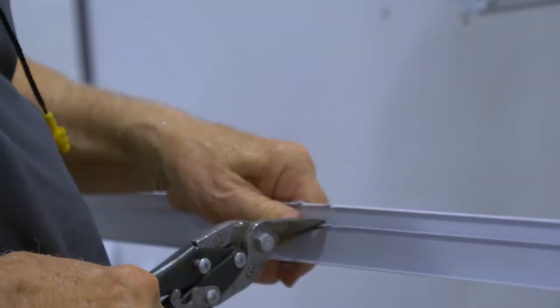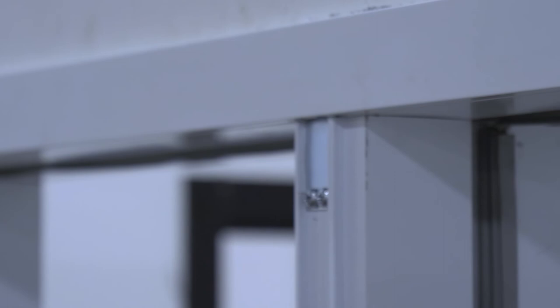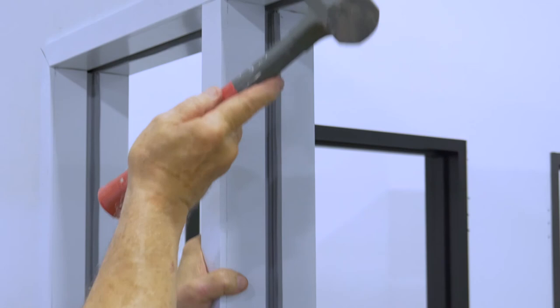Notch the header trim around any FC1 clips being used to attach intermediate vertical mullions. The last step is to install the trim. Starting with the header, the trim should be snapped on using a rubber mallet.